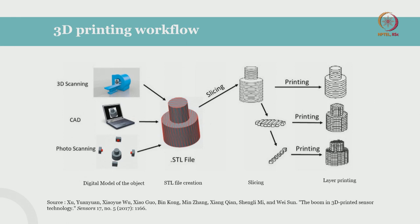Once we generate an STL or OBJ file, we send that file to a slicing software. Slicing software depends upon which machine we are using — we will use different slicing software for different machines. The slicing software will slice our model layer by layer and convert it into a code or program which our machine will understand. First we generate a 3D file, convert it into an STL file, then give it to the slicing software. That slicing software slices our file into layer-by-layer steps and generates G-code — for example, for FDM 3D printers it will convert it into G-code — and then sends that file to the printer for making the end object.